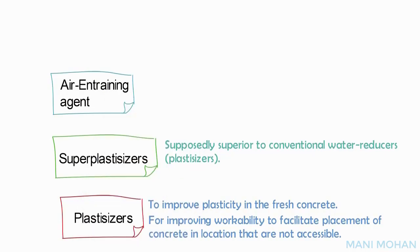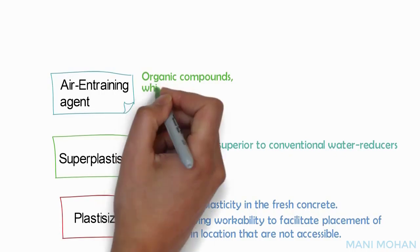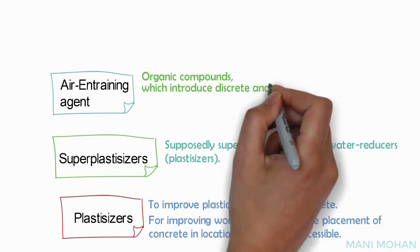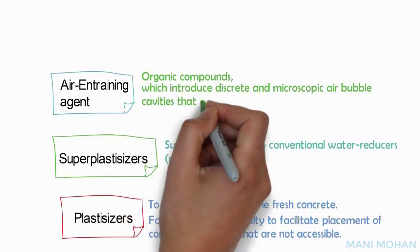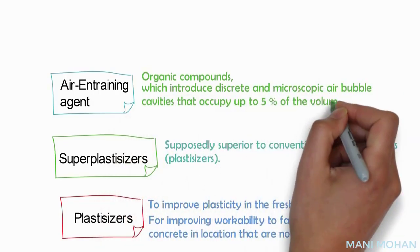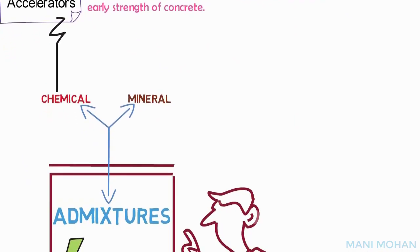Air-entraining agents are organic compounds such as animal and vegetable fats and oils, and wood resins, which introduce discrete and microscopic air bubble cavities that occupy up to 5% of the volume of concrete. These are mainly used for protecting concrete from damage due to alternate freezing and thawing.